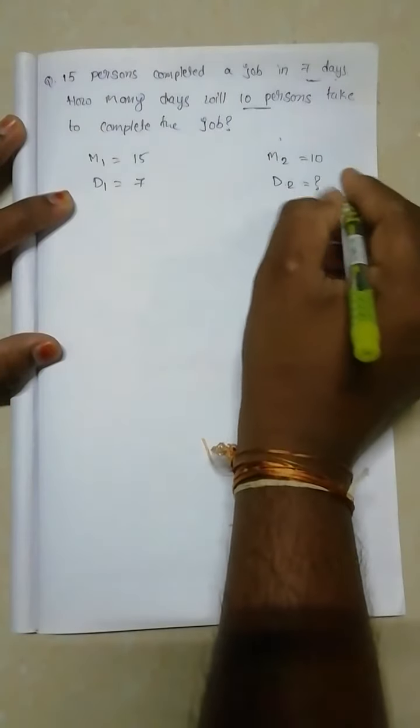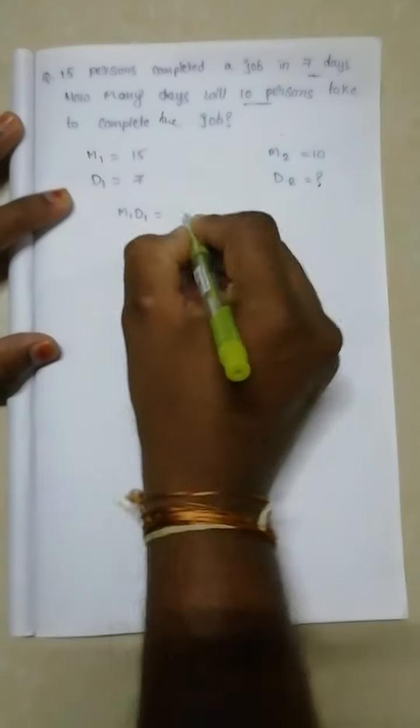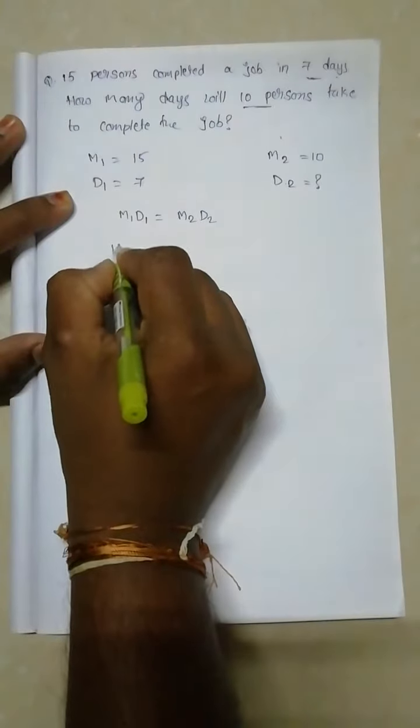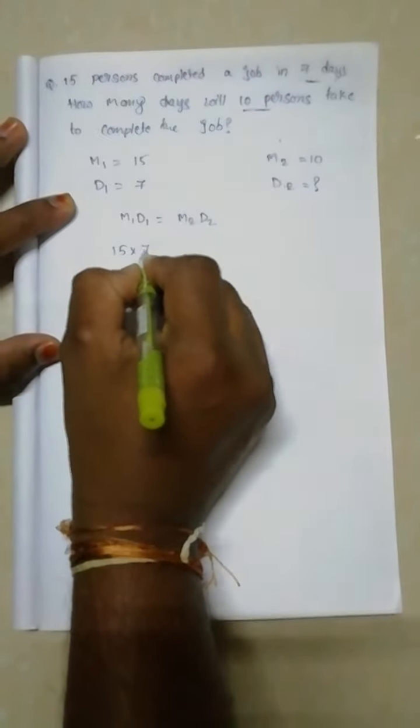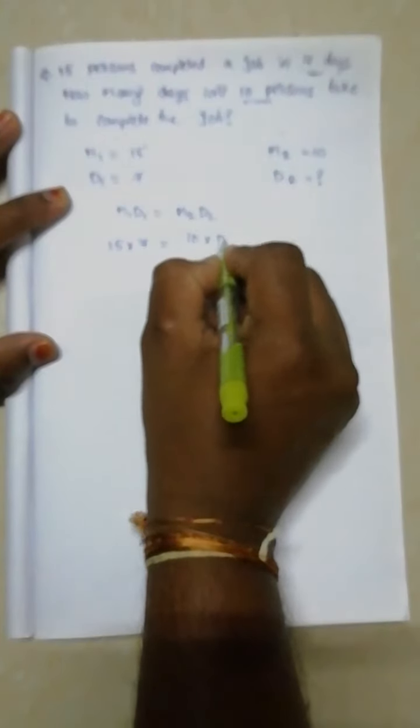For that, our formula is M1 into D1 is equal to M2 into D2. M1 is 15, D1 is 7, and M2 is 10, and D2 we don't know, write it as D2.